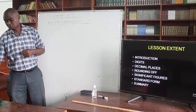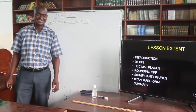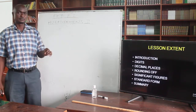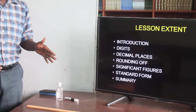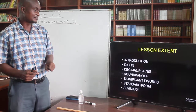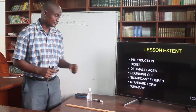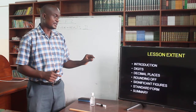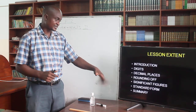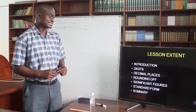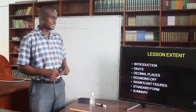This is what will be covered here. We will introduce the topic. We will talk about what digits are, what we mean by decimal places and numbers. Then, when dealing with those numbers, we will talk about rounding off — how we round off numbers, how we find significant figures or write numbers in significant figures, and then how we write numbers in standard form. We will have a summary for this topic.